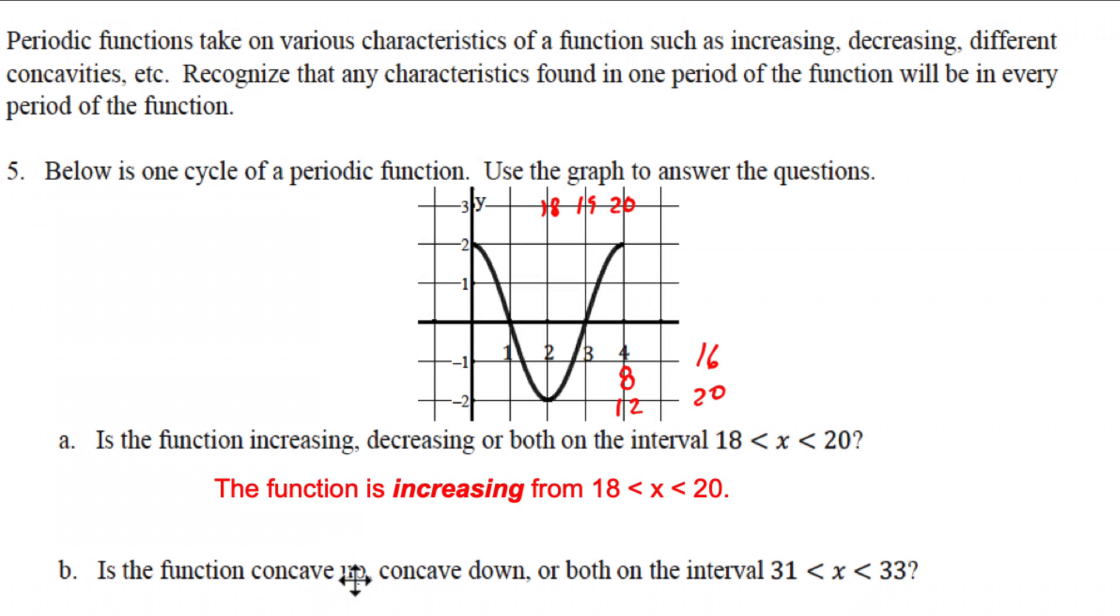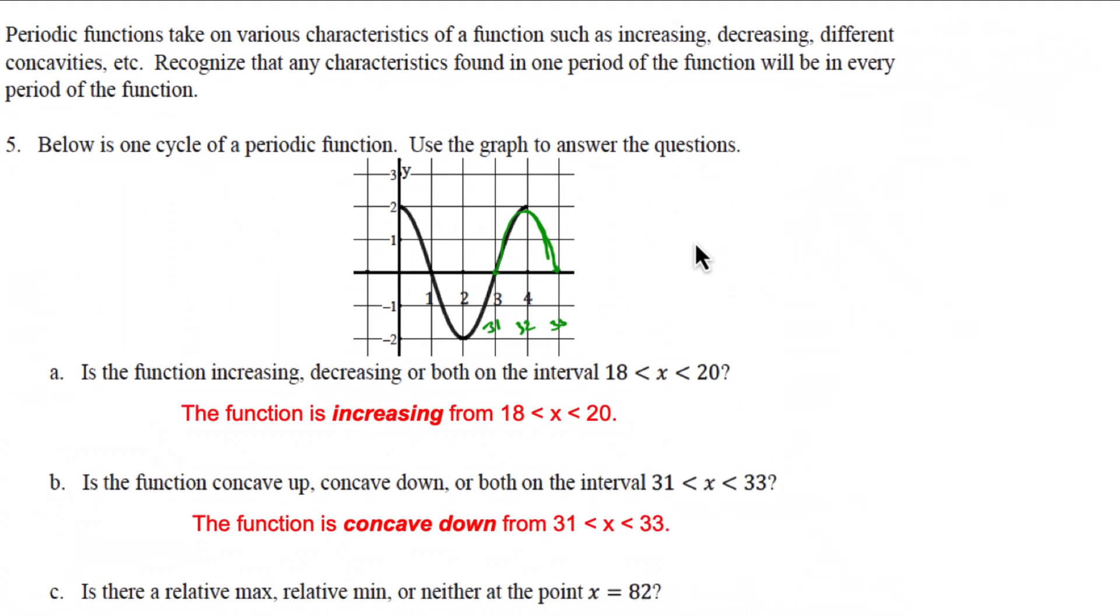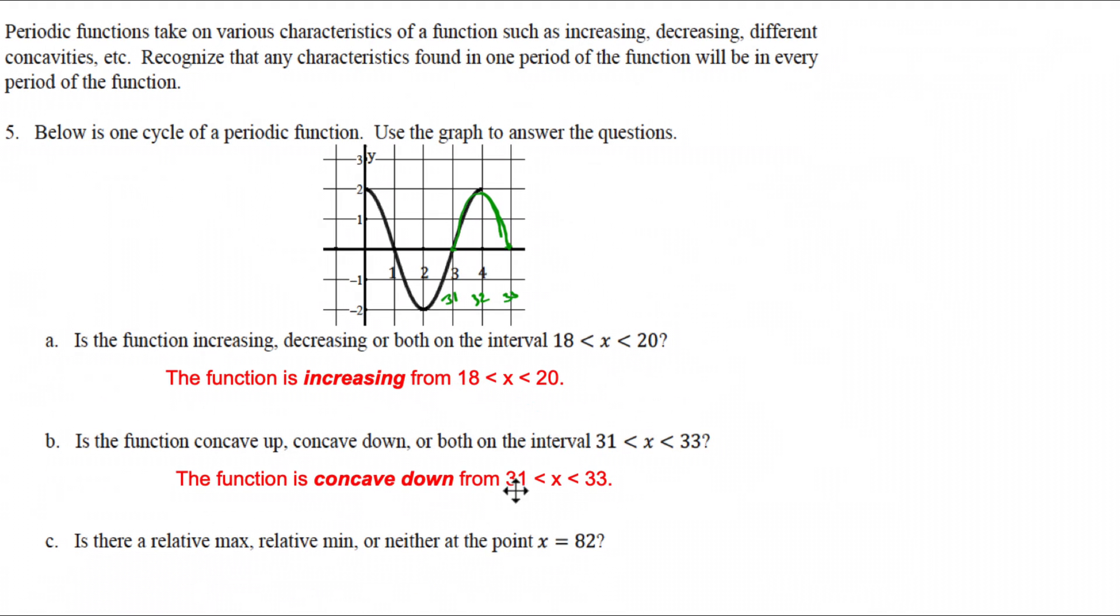Well, the next one asks about concavity. Is it concave up or down or both on the interval from 31 to 33? We can use the same logic. Multiples of 4 are going to be at a maximum, so that means that 32 will be the maximum. Let's clear that out. I know that 32 will be a maximum, that means that 31 would be here at 0, and then 33, because this is repeating, would come back down to 0, so it would look like this. Is that concave up, down, or both? Both don't make no sense. So we would say concave down from 31 to 33.